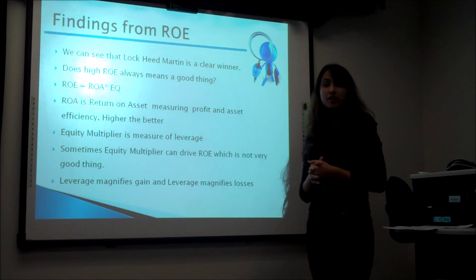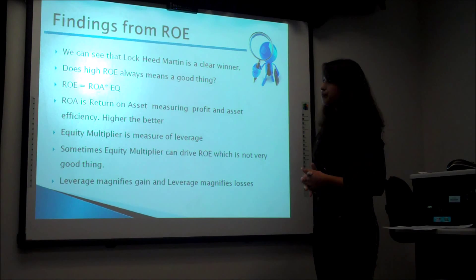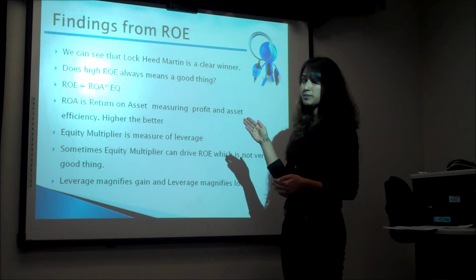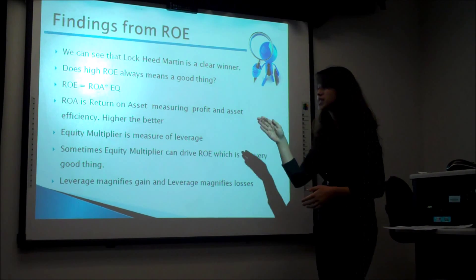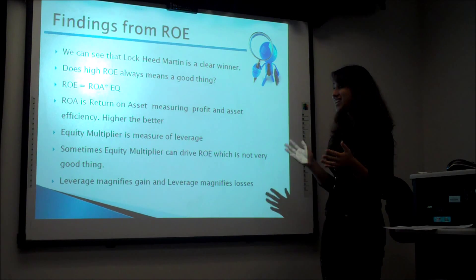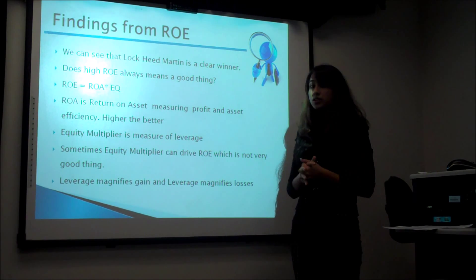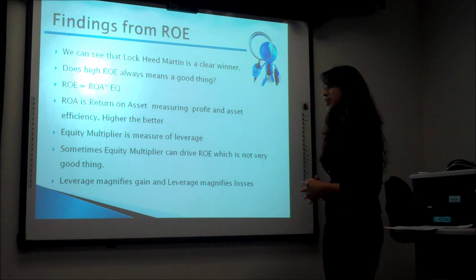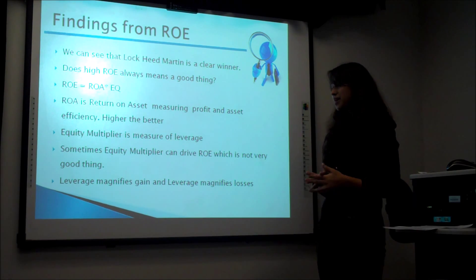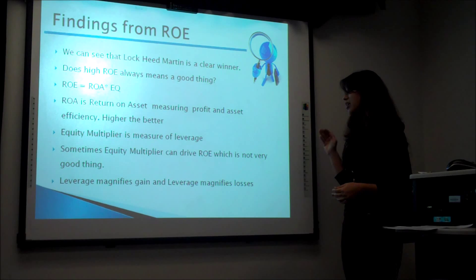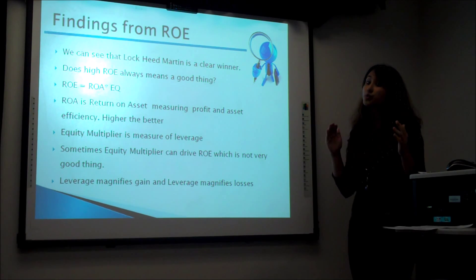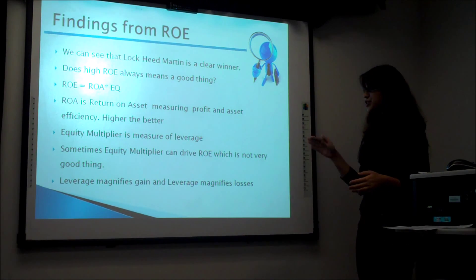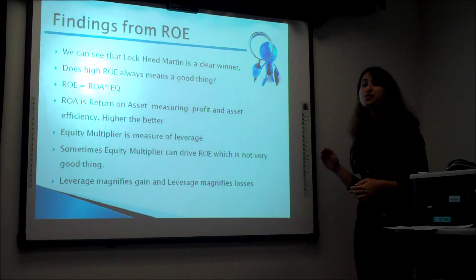Having a high ROE alone is not sufficient. Let's look at the measures of ROE, which are ROA and equity multiplier. ROA stands for return on asset, measuring the profit and asset efficiency of a company. The higher the ROA, the better it is considered for a company. Equity multiplier is a measure of leverage. Sometimes equity multiplier can drive ROE, which is not always a good thing, depending on the return — leverage magnifies gains and leverage magnifies losses.